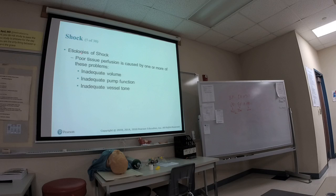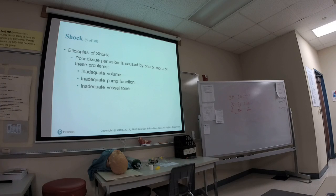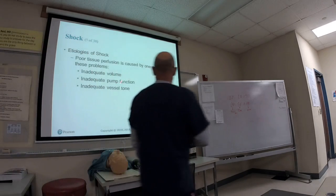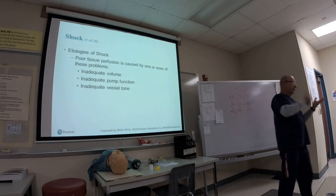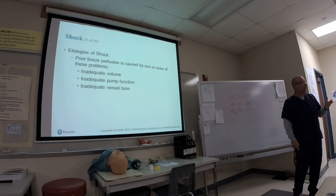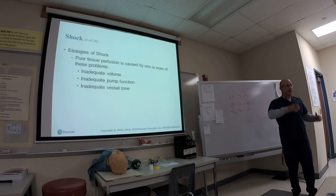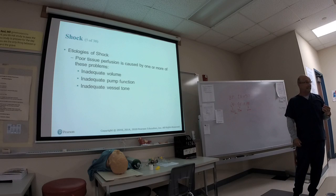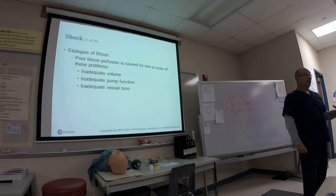The etiologies — how shock happens — include inadequate volume, which is hypovolemic shock. 'Hypo' means low, 'volemic' refers to volume. Hemorrhagic shock specifically involves hemorrhage — bleeding. We can lose volume different ways: nausea, vomiting, diarrhea — coming out both ways, causing dehydration. We still need that volume to maintain pressure.